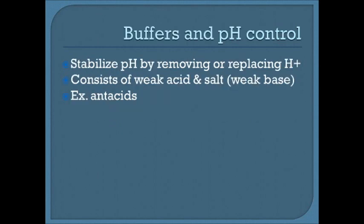Buffers stabilize pH by removing or replacing hydrogen ions. They consist of weak acids and salts, which tend to be weak bases. A common example is antacids — they act as buffers. Antacids contain bicarbonate, which neutralizes stomach acid — the hydrochloric acid — resulting in a product of water and salt. So when we're producing too much stomach acid, that's when antacids like Tums are needed.